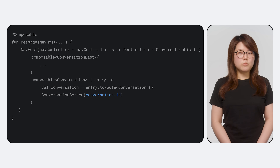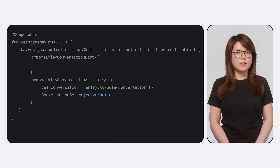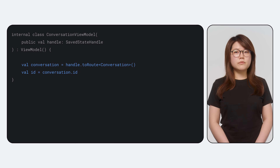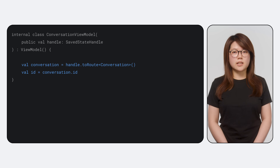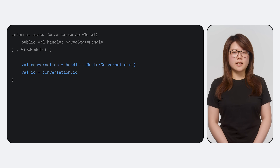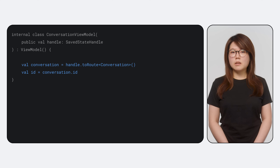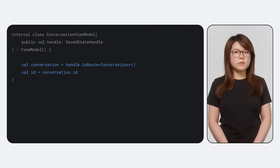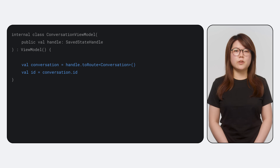This toRoute API also extends to SavedStateHandle. If you use view models with SavedStateHandle, in your view model you can call SavedStateHandle.toRoute, and similar to before, this will also recreate and return the conversation object.